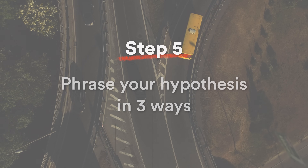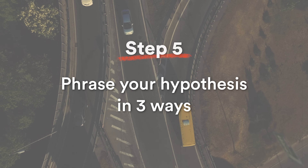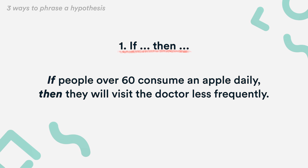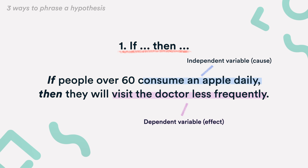Step 5: Phrase your hypothesis in three ways. First, we have the if-then form: If people over 60 consume an apple daily, then they will visit the doctor less frequently. The first part of the sentence — daily apple consumption — states the independent variable.